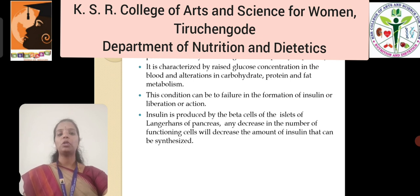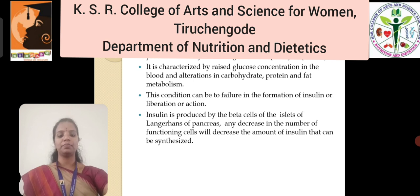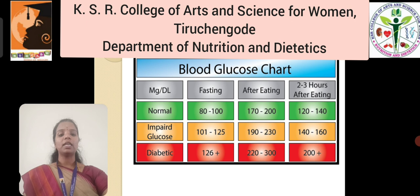Insulin is produced by beta cells of islets of Langerhans present in the pancreas. Any decrease in the number of functioning cells will decrease the amount of insulin that can be synthesized. This chart represents the blood glucose level during fasting and postprandial levels.